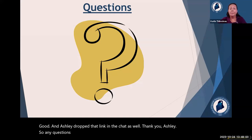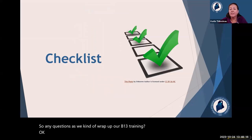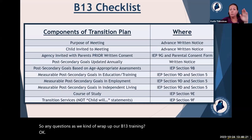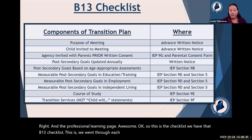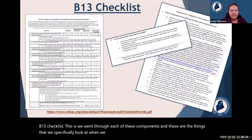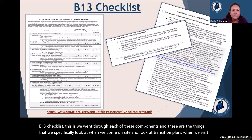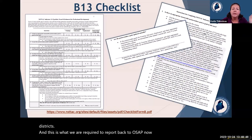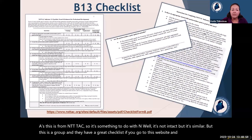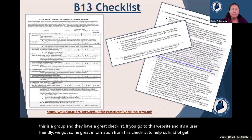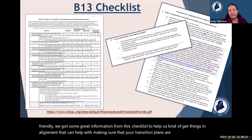The B13 checklist covers all the components we specifically look at when we come onsite and look at transition plans when we visit districts — and this is what we are required to report back to OSEP. This checklist is from NSTTAC; it's a user-friendly resource that can help make sure your transition plans are complete and have all the necessary components.